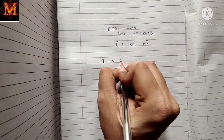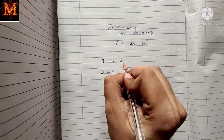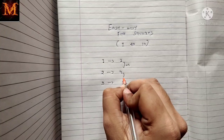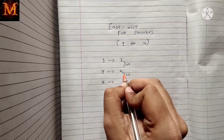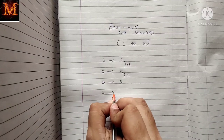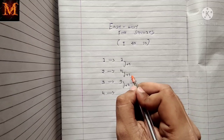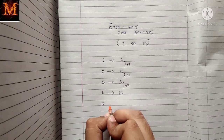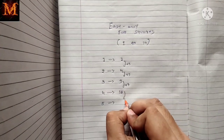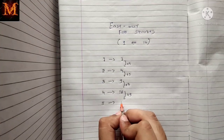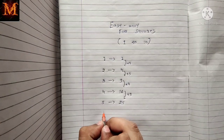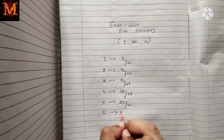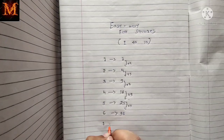Square of 1 is 1. Square of 2: add plus 3, so 4. Square of 3: add plus 2 to get plus 5, so 4 plus 5 is 9. Square of 4: add plus 2 to get plus 7, so 9 plus 7 is 16. Square of 5: add plus 2 to get plus 9, so 16 plus 9 is 25. Square of 6: add plus 2 to get plus 11, so 25 plus 11 is 36.